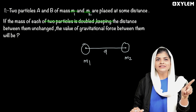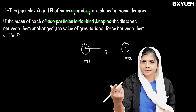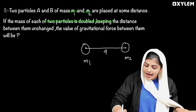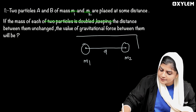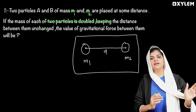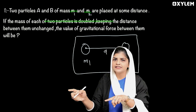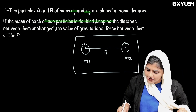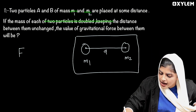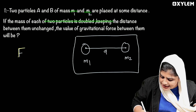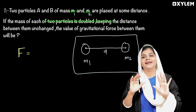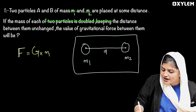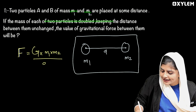We are going to talk about the mass of each particle. If the mass of each particle is doubled, we will double the mass. The gravitational force formula is F equals G into M1 into M2 divided by D squared.